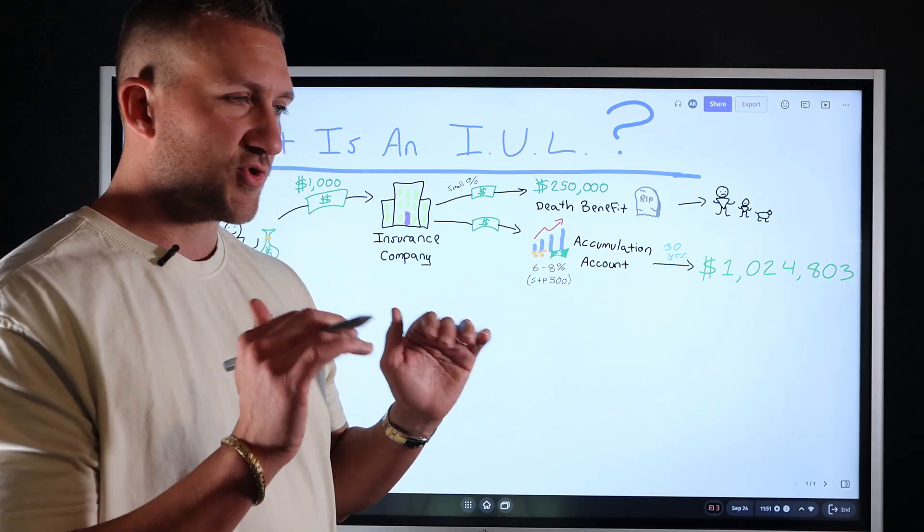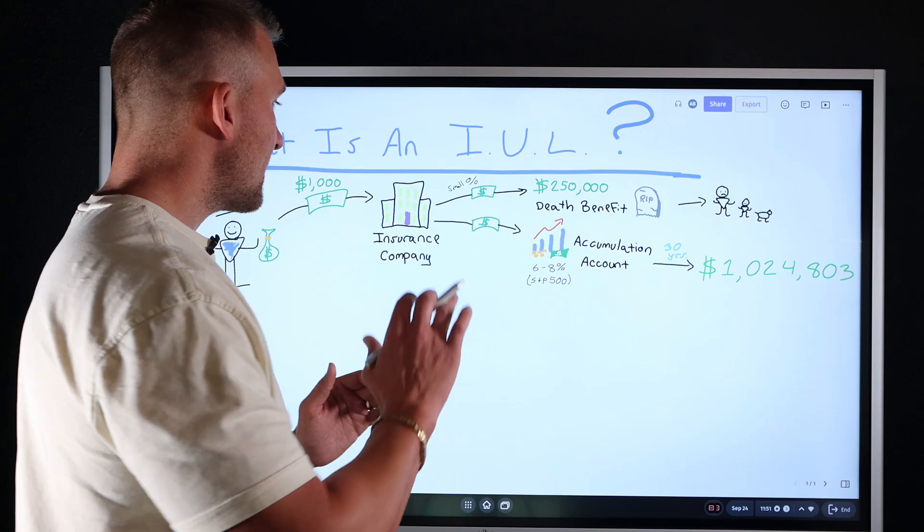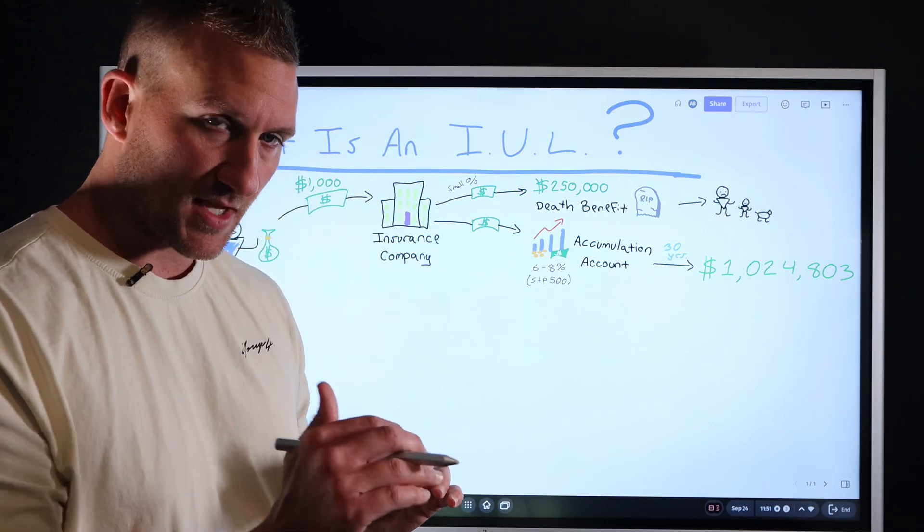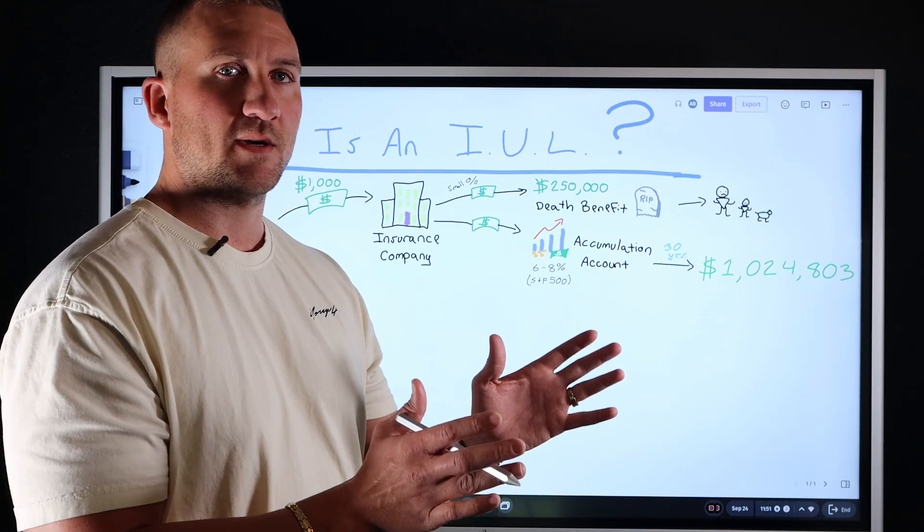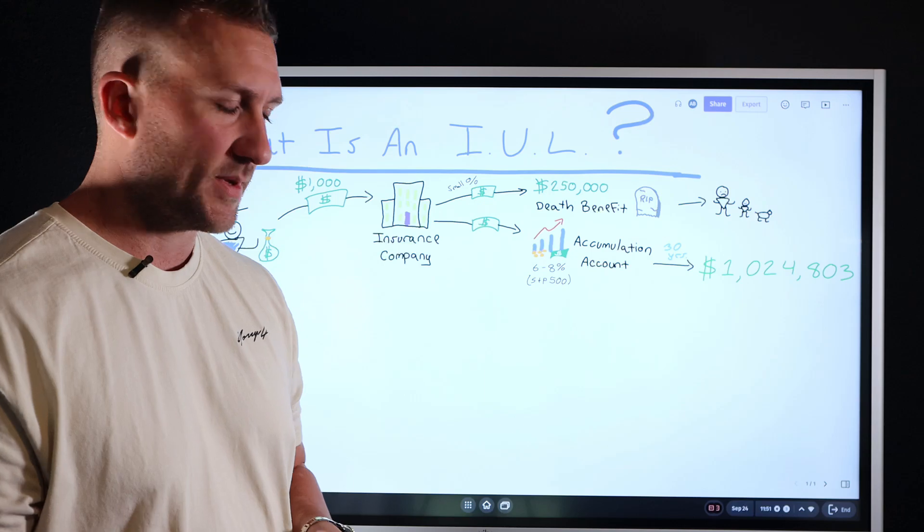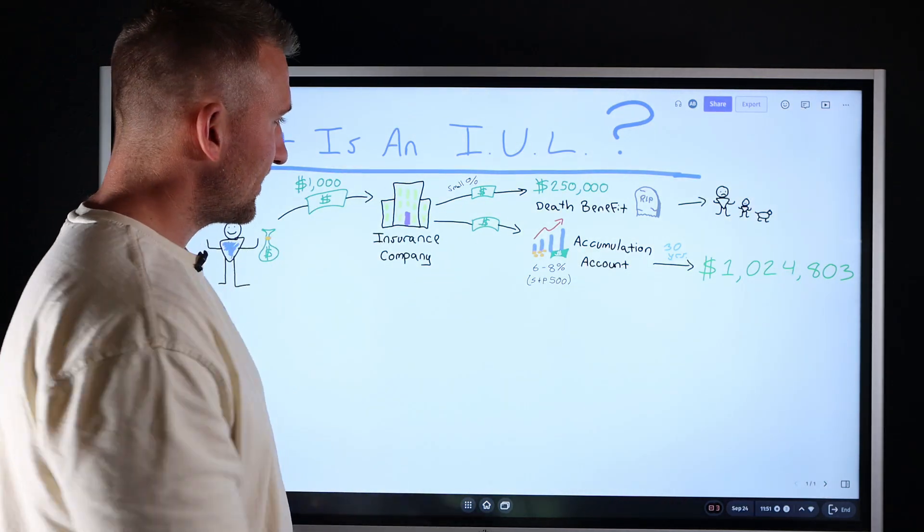There's some very strict stipulations because again, this is a tax favorable account. That is the most he can put into this account every single year. It's 12,000 per fiscal year is the most he can put in. If he puts in more, he will create what is known as a modified endowment contract. And we'll get into that later. But right now he's going to put a thousand bucks per month into this account.